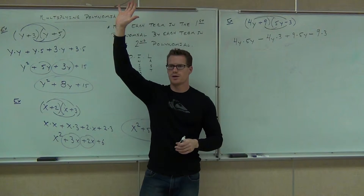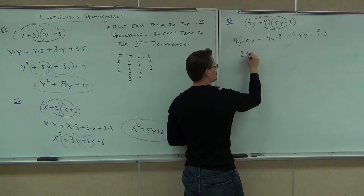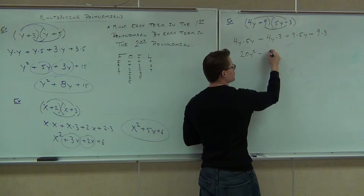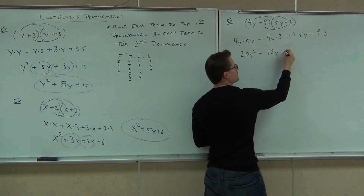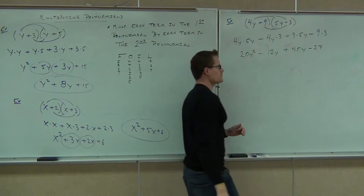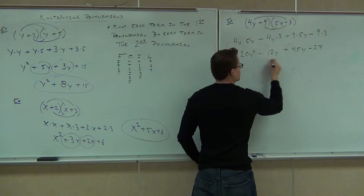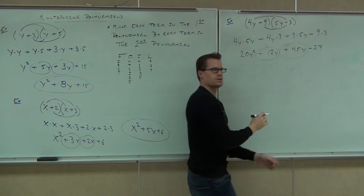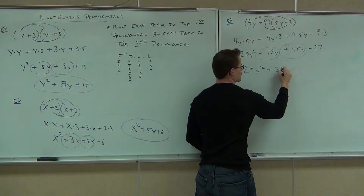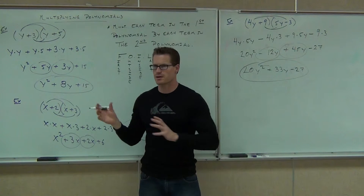Raise your hand if you're okay getting that far on this problem. Now let's continue. How much is 4y times 5y? Multiplying there, we can take a y times a y and get y squared. Minus how much? Minus 12y. 12y plus 45y. And then minus 27. Are there any like terms to combine? Am I going to get a y squared when I combine those? No. So I get 20y squared. These are the problems you can expect when you test.